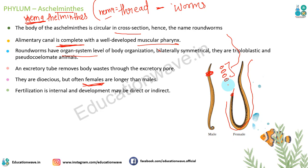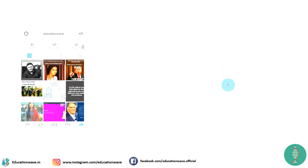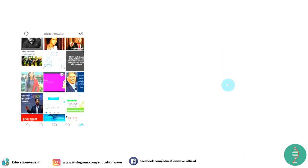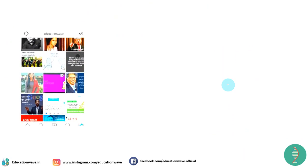Fertilization internal hoti hai aur development direct bhi ho sakta hai aur indirect bhi - alag alag cases mein different hai. Examples hain Ascaris (round worm) aur Wuchereria jise filaria worm bhi kehte hain.